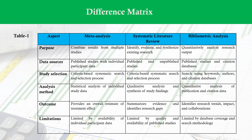Systematic literature review is a qualitative research method that aims to identify, analyze, and synthesize all available literature on a specific research question. It focuses on a narrow scope of study and includes a lesser number of papers for review compared to bibliometric analysis. Systematic literature reviews are often used to provide evidence-based recommendations or informed policymaking.